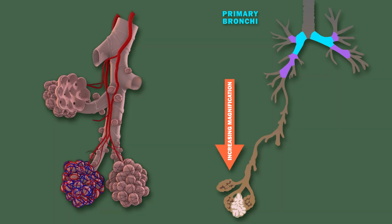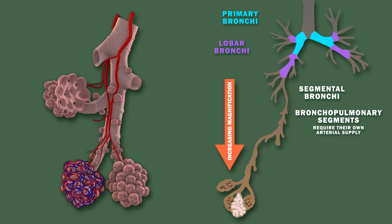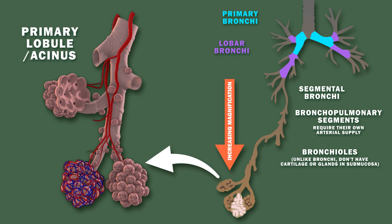Primary bronchi branch into lobar bronchi, then into segmental bronchi, which supply bronchopulmonary segments — each requiring their own arterial supply. Bronchi branch further into bronchioles, and the lung's functional unit is the primary lobule, also called the acinus.